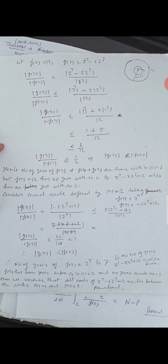Since z⁷ - 5z³ + 12 has 7 zeros inside |z| = 2 and no zeros inside |z| = 1, we conclude that all 7 roots of z⁷ - 5z³ + 12 = 0 lie between the circles |z| = 1 and |z| = 2. Thank you.